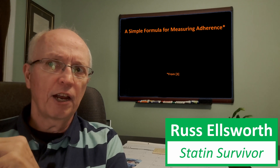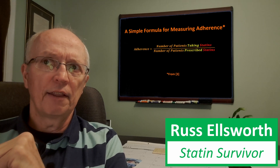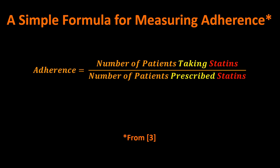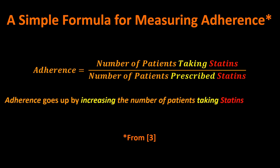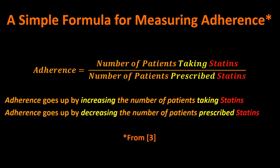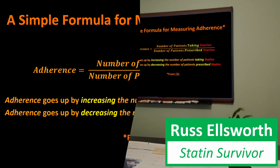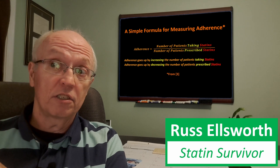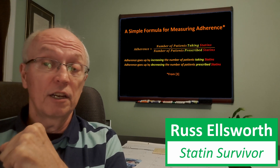There's a simple formula for measuring adherence from paper number three: adherence equals the number of patients taking statins divided by the number of patients who were prescribed statins. How can we improve adherence? If we increase the number of patients who take the statins they've been prescribed, adherence goes up. But adherence also goes up if we decrease the number of patients who are prescribed statins in the first place — you can increase the numerator or decrease the denominator, and that will increase adherence.